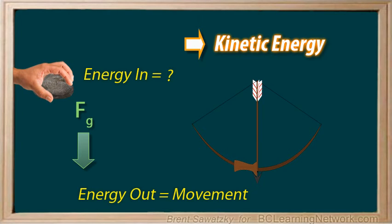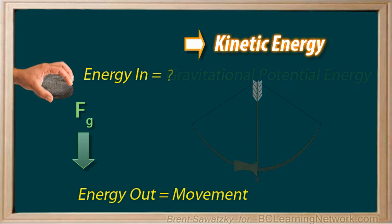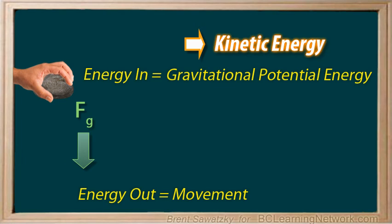You're increasing its potential energy. The further you pull back the arrow in the bow, the more potential energy you'll have for converting, and the more kinetic energy you'll get when you release it. In the same way, the higher you lift a rock, the more gravitational potential energy you'll have to convert.